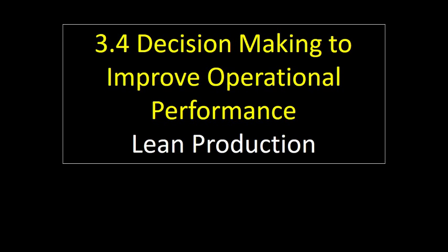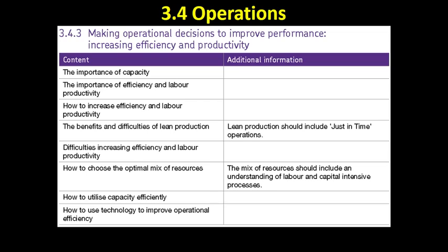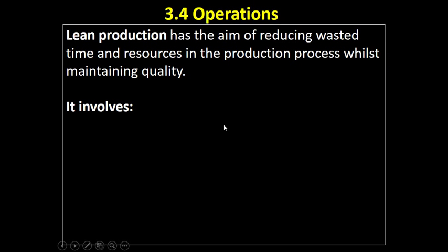This short video on lean production is looking at the benefits and difficulties of lean production. Lean production has the aim of reducing wasted time and resources in the production process while at the same time maintaining quality. It's really a production philosophy that originated in Japanese manufacturing.